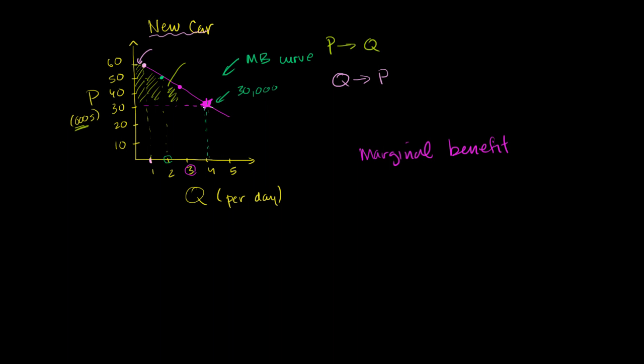But what we hinted at is if you do have one price for everybody, and in the future we'll talk about not having one price for everybody. But if you did have one price for everyone, these first units were kind of sold below where they could have been sold. They were sold below their marginal benefit. So remember, we're viewing this same demand curve as a marginal benefit curve. So this first unit, it could have been sold at $60,000. But now we're selling it for $30,000.